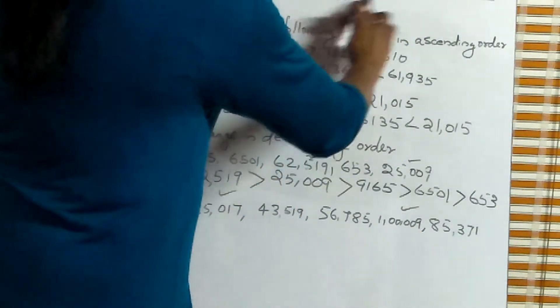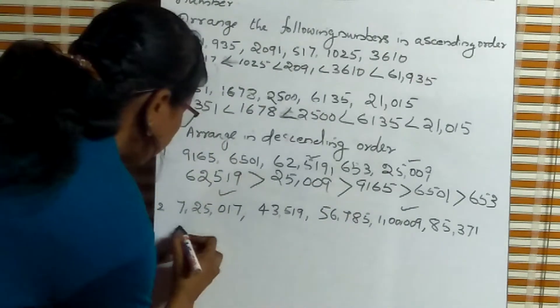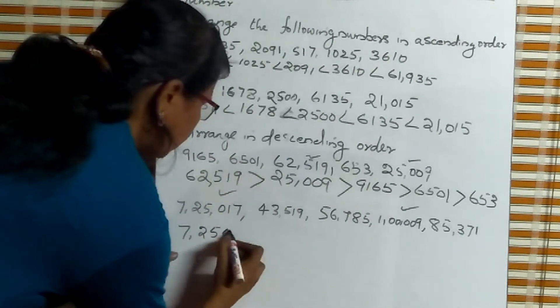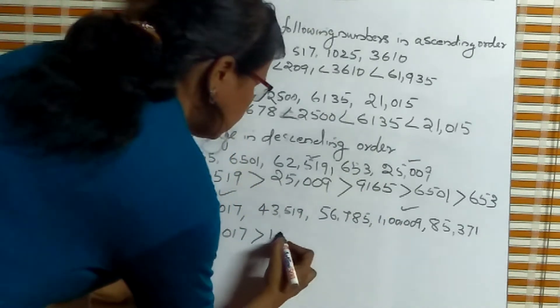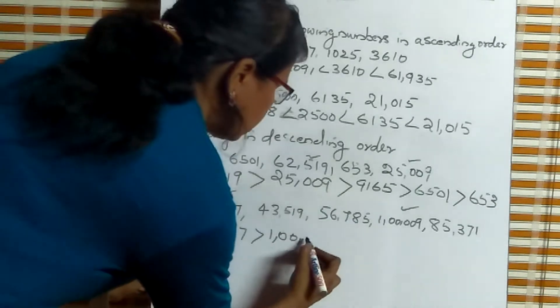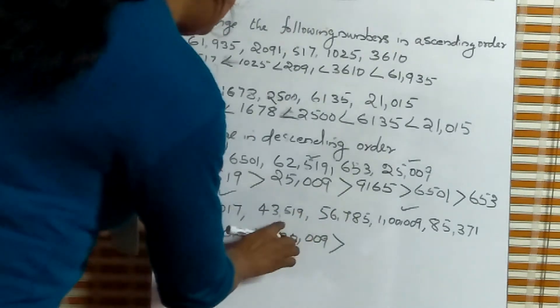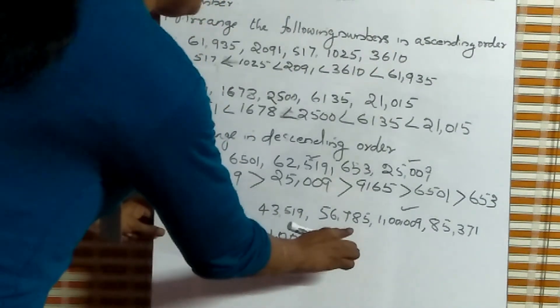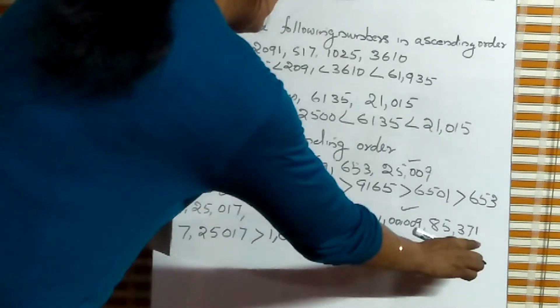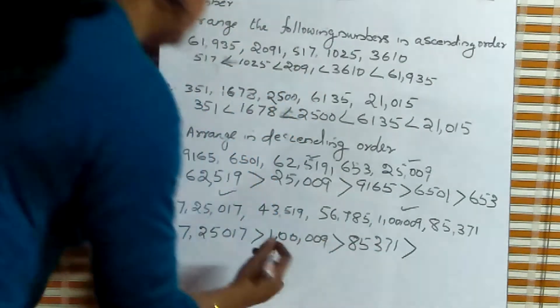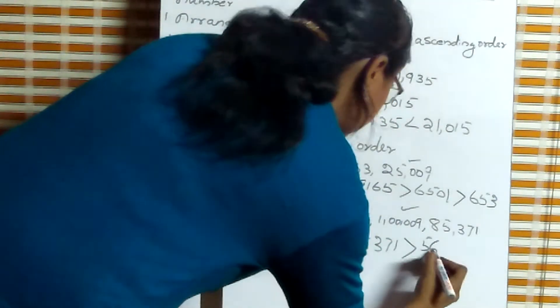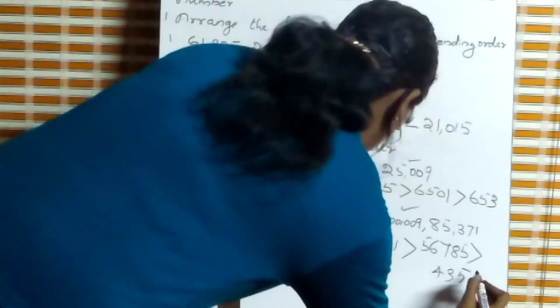Descending order means the greatest number to smallest number. The greatest number is 7,25,017. Greater than. Next number is 1,09,199. Next: comparing the five-digit numbers, we need 43,519; 56,785; and 85,371. The greatest among these five-digit numbers is 85,371. So: 85,371 greater than 56,785 greater than 43,519.